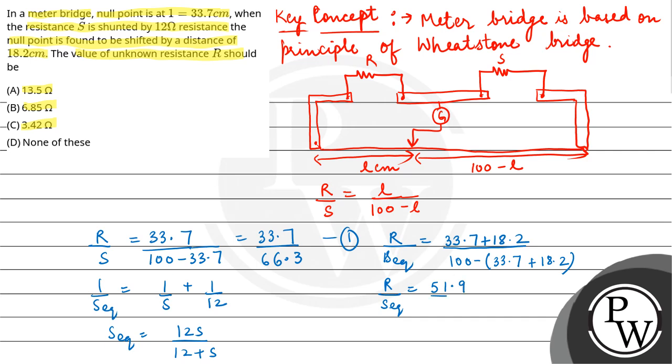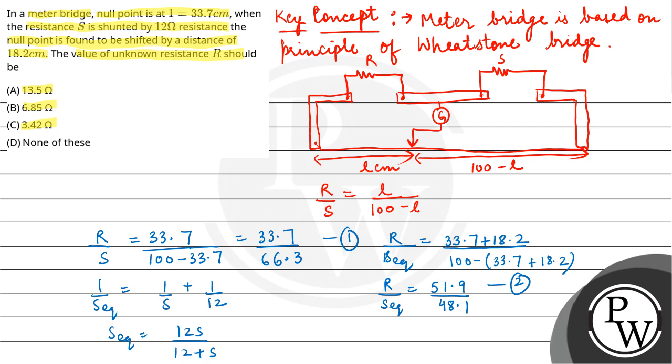So from here, R upon S equivalent equals 51.9 upon 48.1. This is your second equation. Now dividing equation first by second, we will get R by S upon R by S equivalent equals 33.7 upon 66.3 into 48.1 upon 51.9.